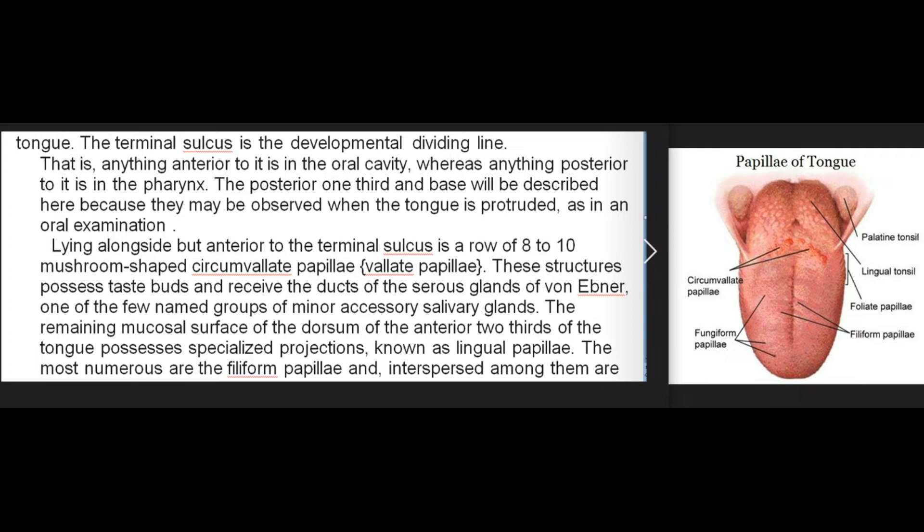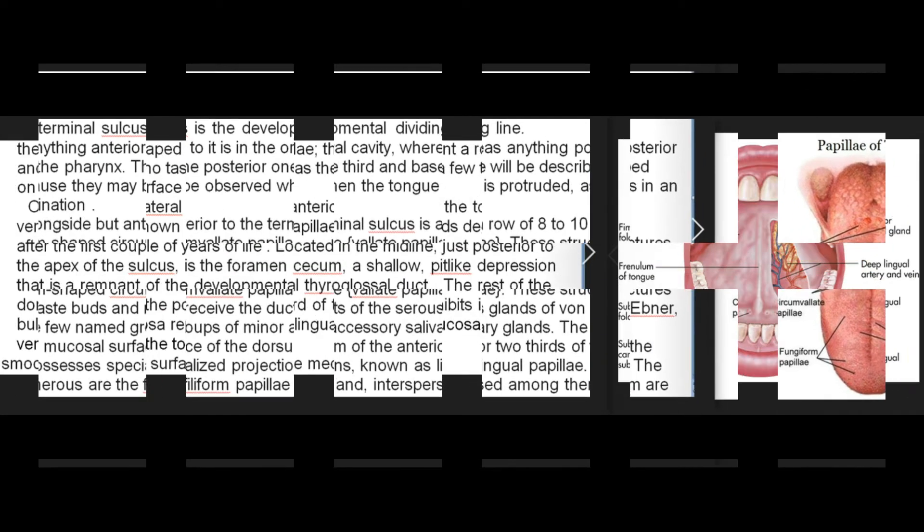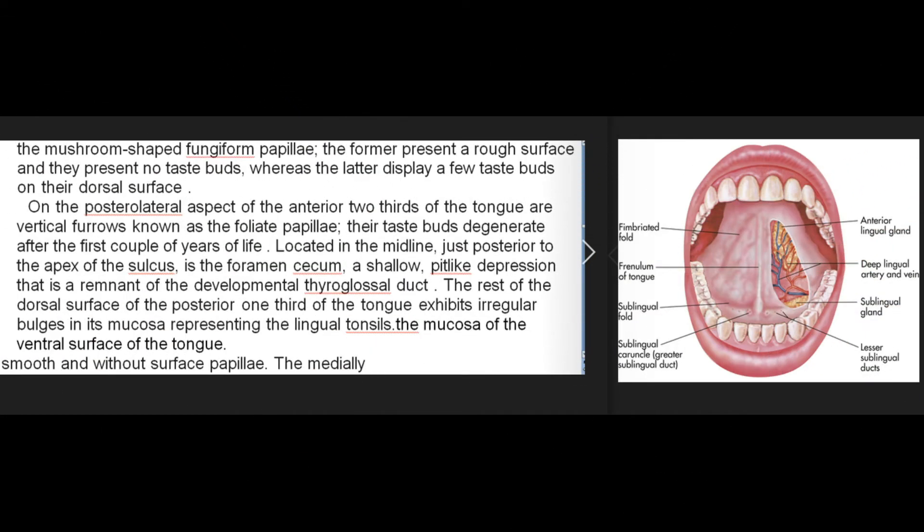The circumvallate papillae possess taste buds and receive the ducts of the serous glands of von Ebner, one of the few named groups of minor accessory salivary glands. The remaining mucosal surface of the dorsum of the anterior two-thirds of the tongue possesses specialized projections known as lingual papillae. The most numerous are the filiform papillae, and interspersed among them are the mushroom-shaped fungiform papillae. The filiform papillae present a rough surface and have no taste buds, whereas the fungiform papillae display a few taste buds on their dorsal surface.